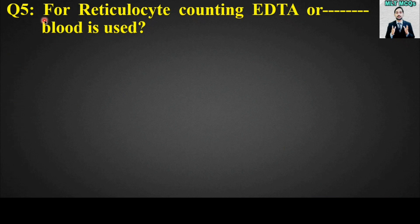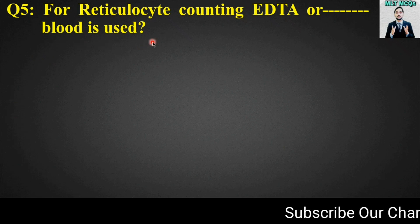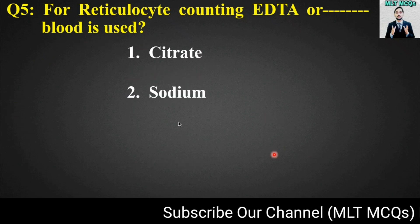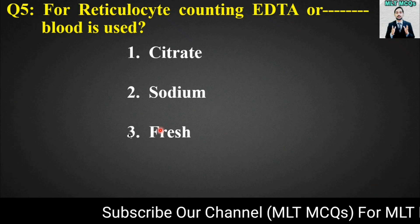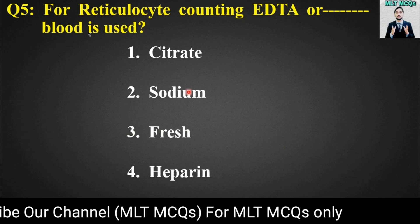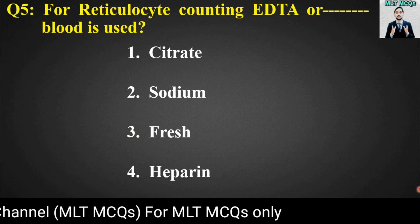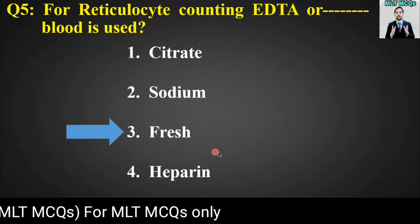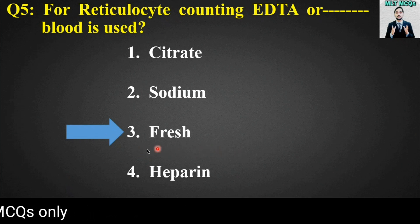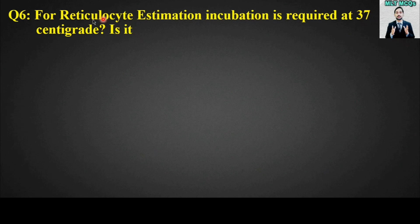MCQ number five: For reticulocyte counting, EDTA or blank blood is used. Options are: citrate, sodium, fresh, or heparin. The right answer is option number three — fresh blood. So for reticulocyte counting, you can use EDTA as well as fresh blood.